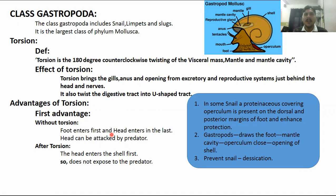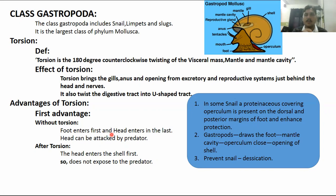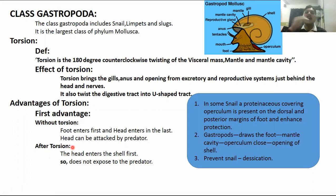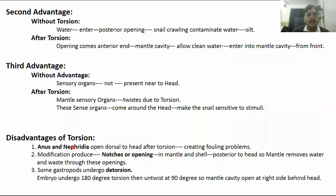Without torsion, having the foot enter first was a mistake — a predator could easily attack the snail when the head was exposed last. But after torsion, the head enters first and the foot follows. This means the sensory structures have maximum time to detect and retreat from any predator. This is the first advantage of torsion.